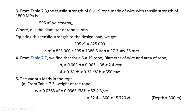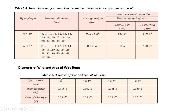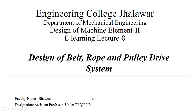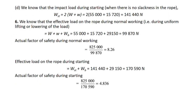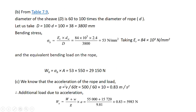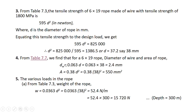From table 7.7, for a 6×19 wire rope, the wire diameter is 0.063 D and the area of the wire rope is 0.38 D². From these expressions, the wire diameter comes out to be 2.4 mm and the area of the rope is 550 mm².